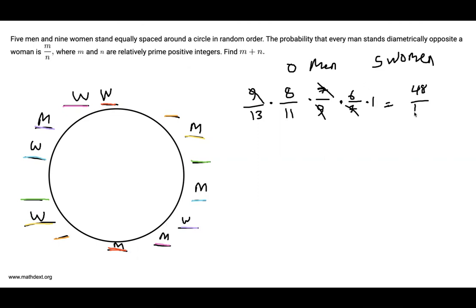143, excuse me. And so m is 48 and n is 143 because they're relatively prime, and m plus n is equal to 191. And we are done. Thanks for watching, I will see you next time.